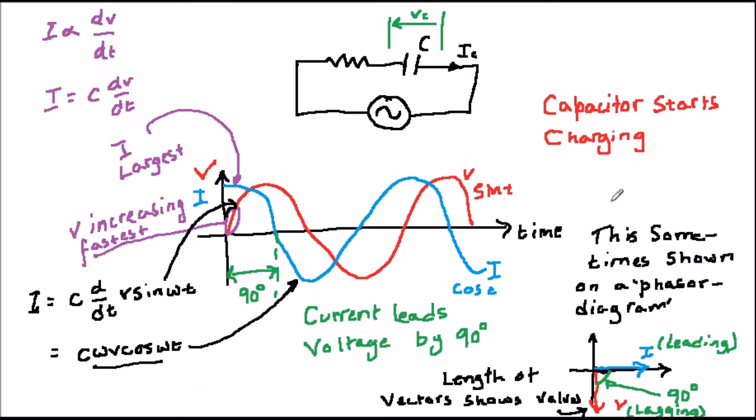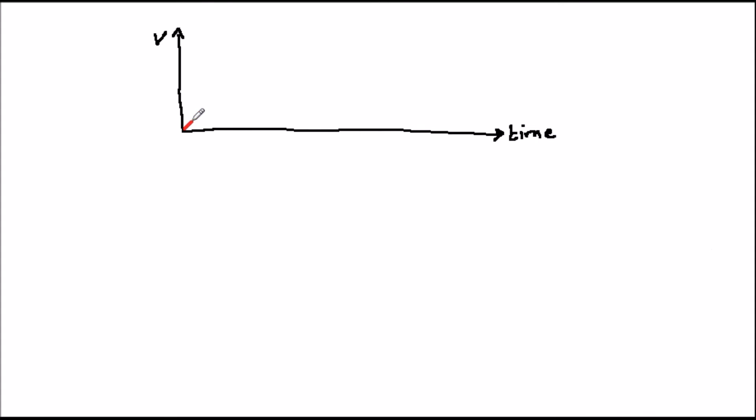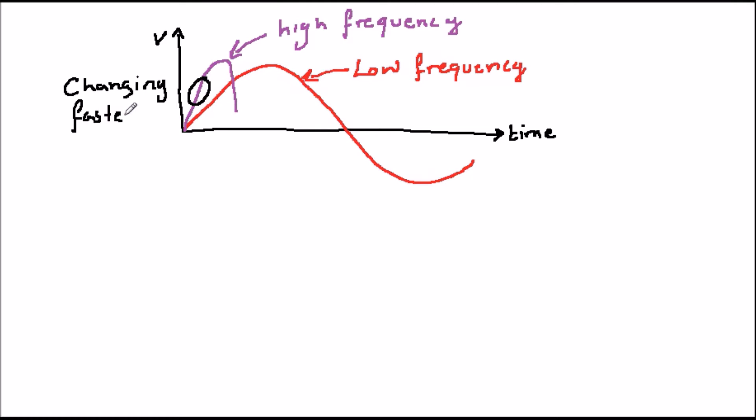Now, a very important point comes from this. Since I is at its largest when V is changing most quickly, if we increase the frequency of the signal, I becomes larger, because at higher frequencies, the voltage changes more quickly. This is illustrated in the diagram.